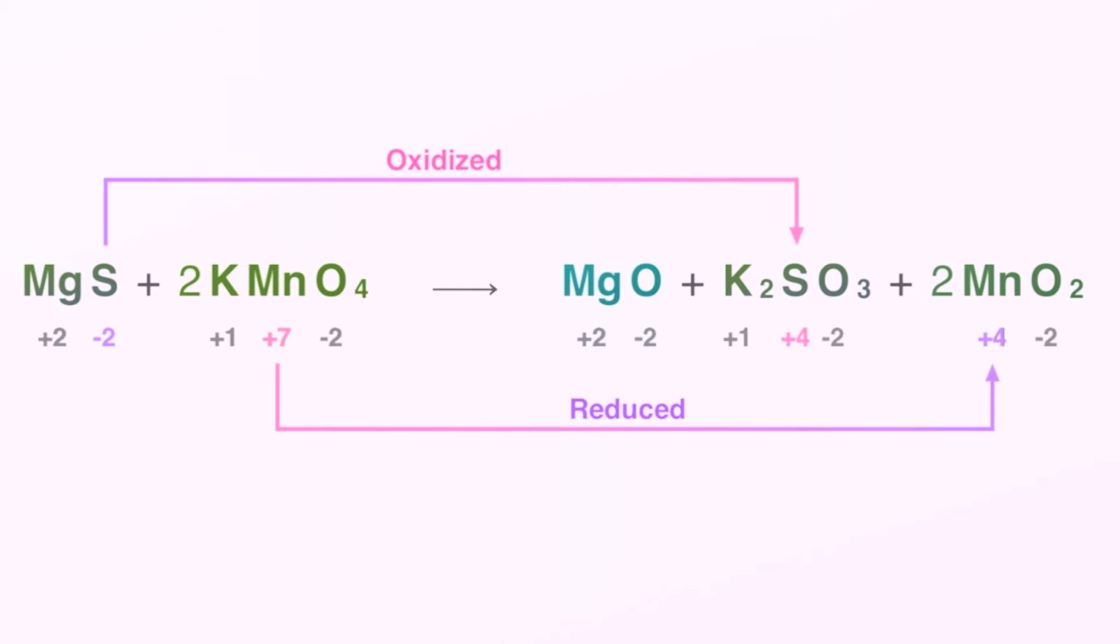Now, if you look carefully at this, our reactant magnesium sulfide is being oxidized. That sulfide ion is losing two electrons. And if you look at the potassium permanganate, that manganese ion is being reduced as it goes from a plus seven to a plus four as it gains electrons in this reduction oxidation reaction.